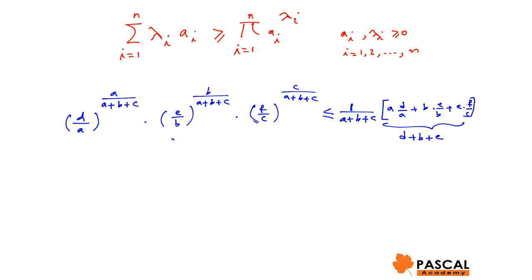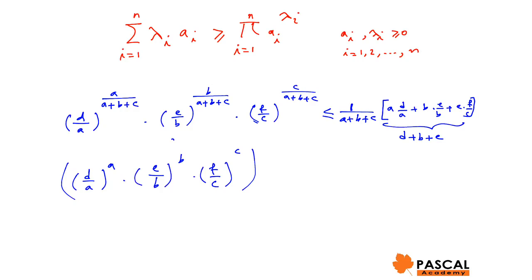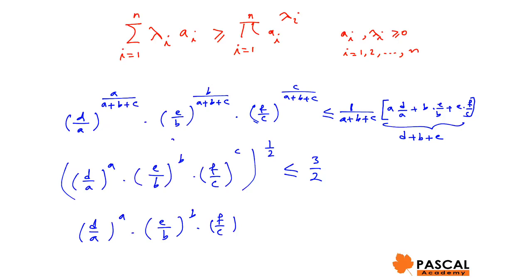Therefore, the left side of the given inequality, (d/a)^a times (e/b)^b times (f/c)^c, raised to the power of 1 over (a+b+c), i.e., 1 over 2, is smaller or equal than 3 over 2. This means (d/a)^a times (e/b)^b times (f/c)^c is smaller or equal than (3/2)^2 equals 9 over 4, which is the desired inequality.